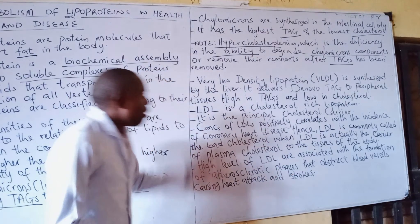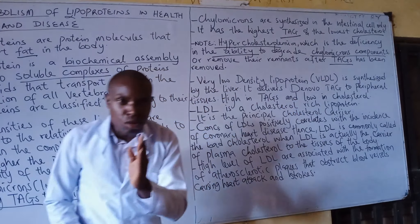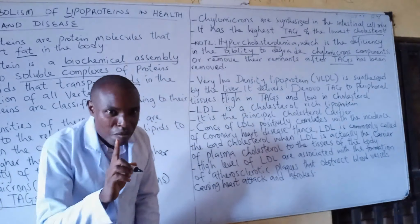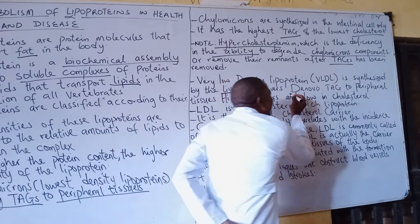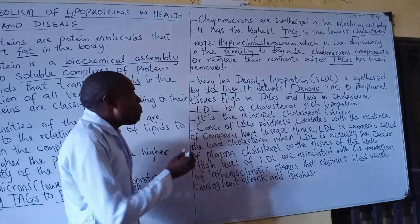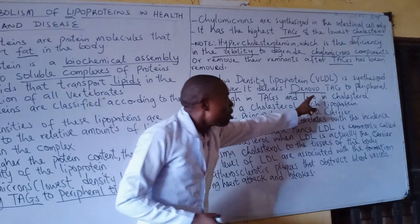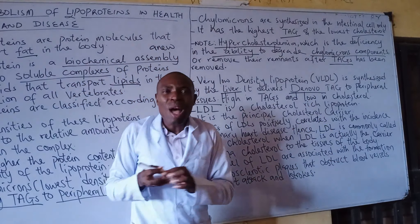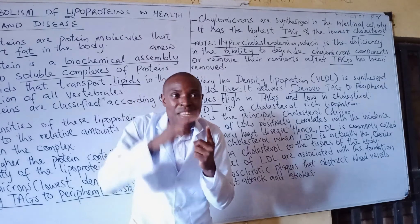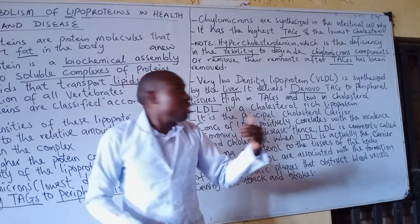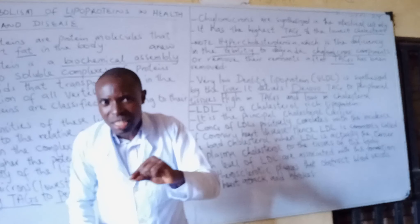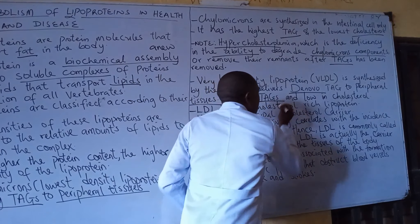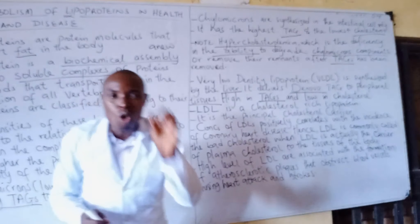The next lipoprotein is VLDL — very low density lipoprotein. Take note that VLDL is synthesized by the liver. Its function is to deliver de novo TAG to peripheral tissues. De novo means 'anew' — from the beginning, meaning TAG can also be delivered from other fresh sources. Take note that VLDL is high in TAG and low in cholesterol.